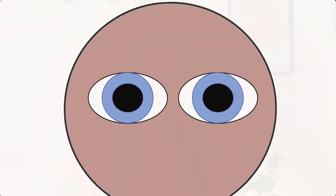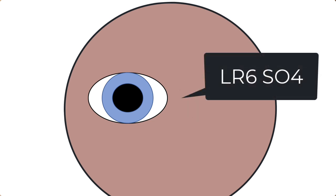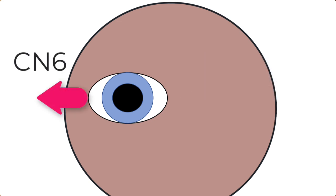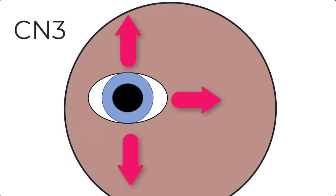First things first, a very quick revision of the cranial nerves that control eyeball movements. I like to use the LR6SO4 memory aid. Lateral rectus is innervated by cranial nerve 6 and moves the eyeball outwards or laterally. Cranial nerve 4 innervates the superior oblique muscle, which moves the eyeball down and out. And cranial nerve 3, also known as the oculomotor nerve, innervates all of the other eyeball muscles.